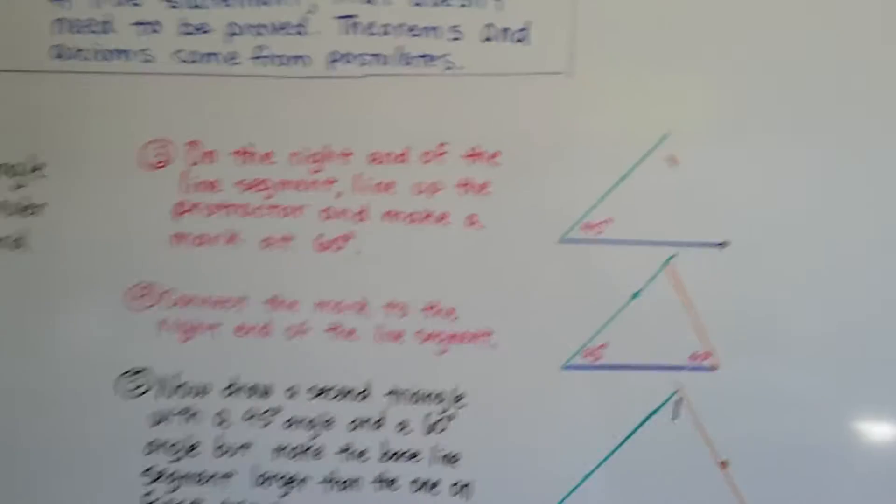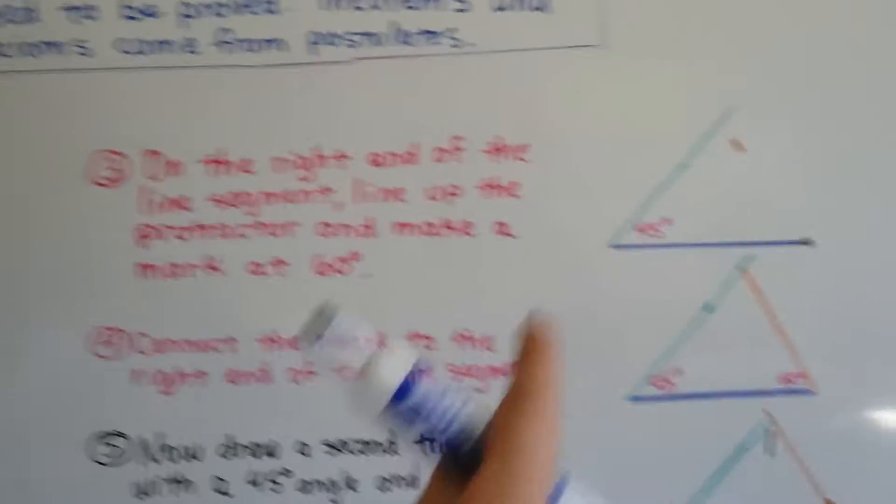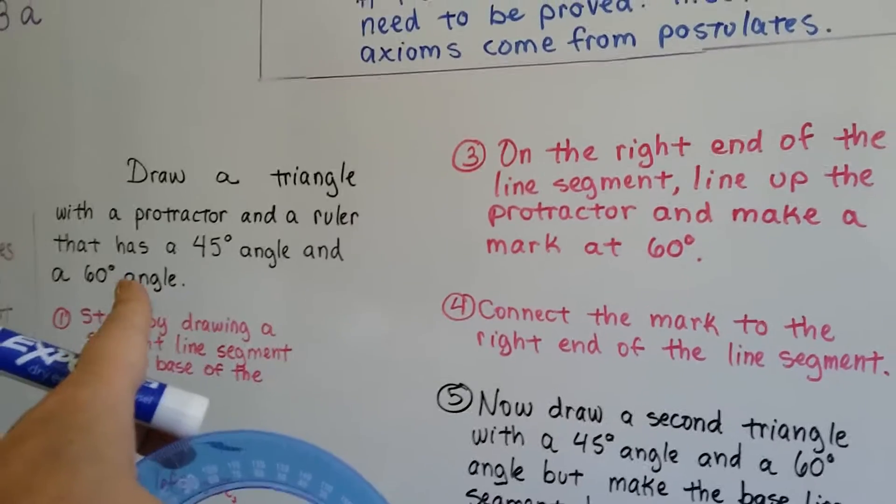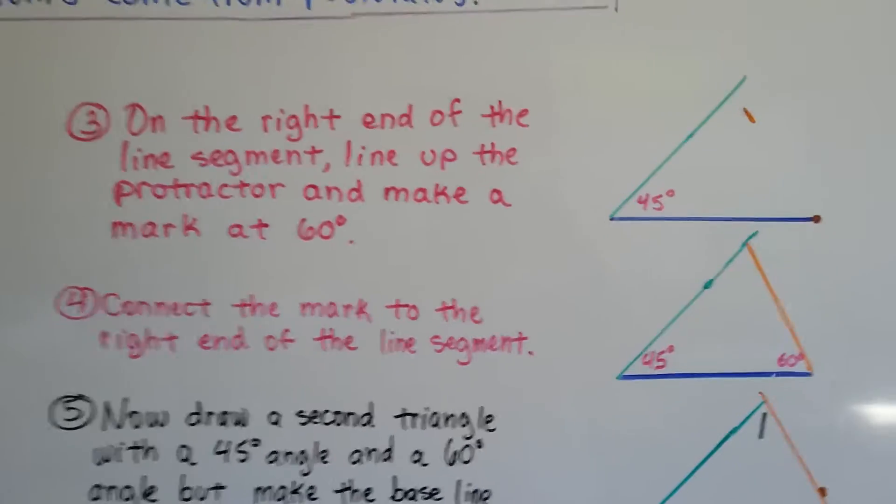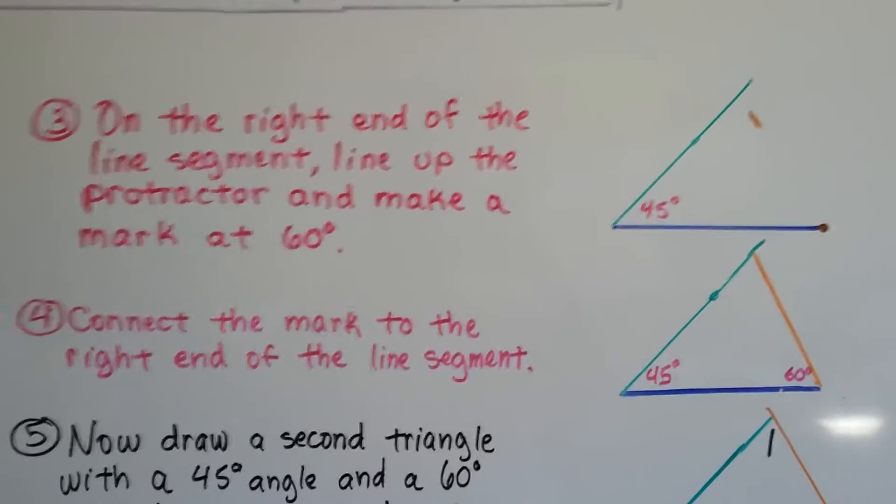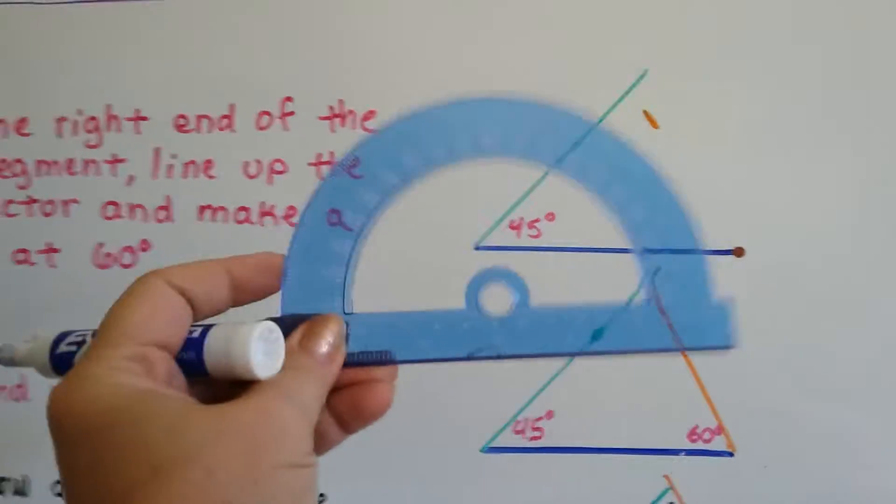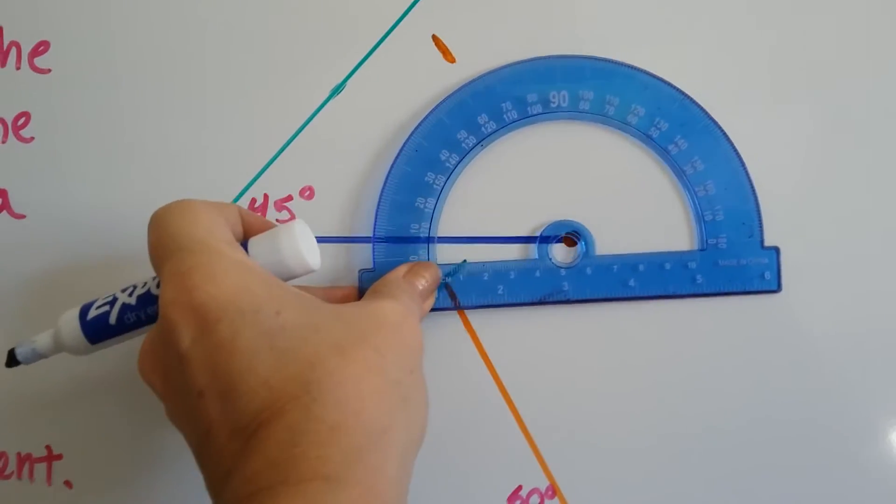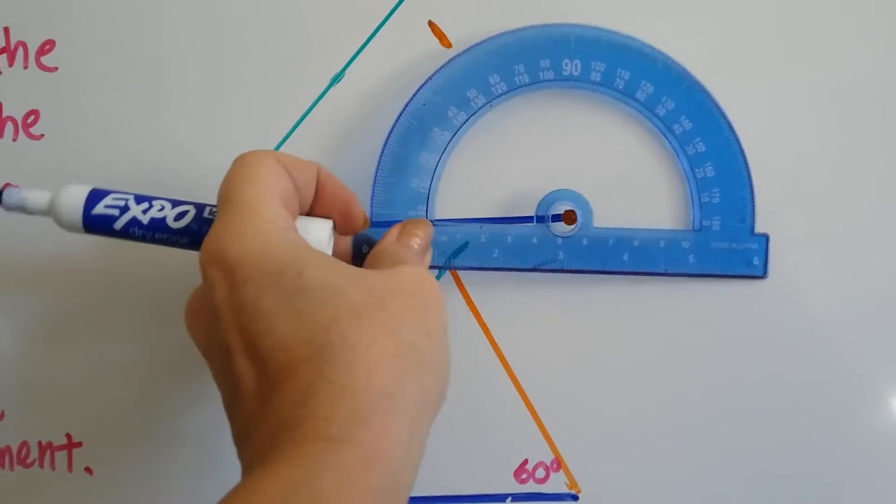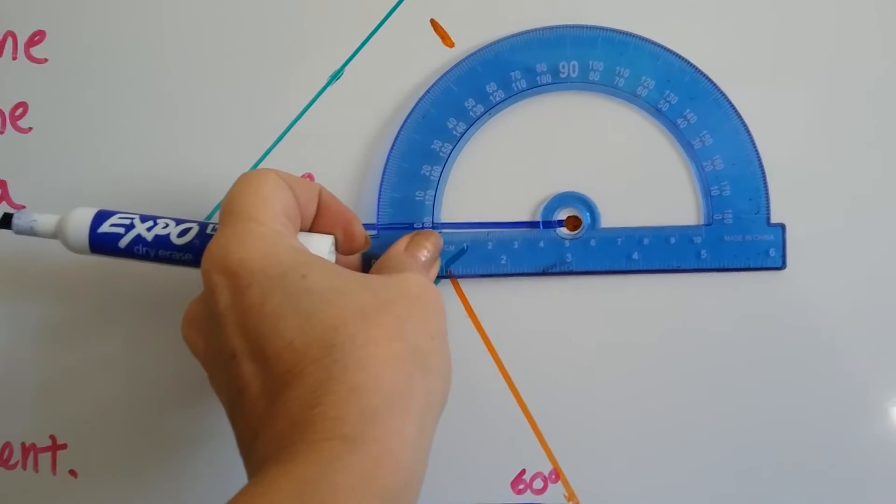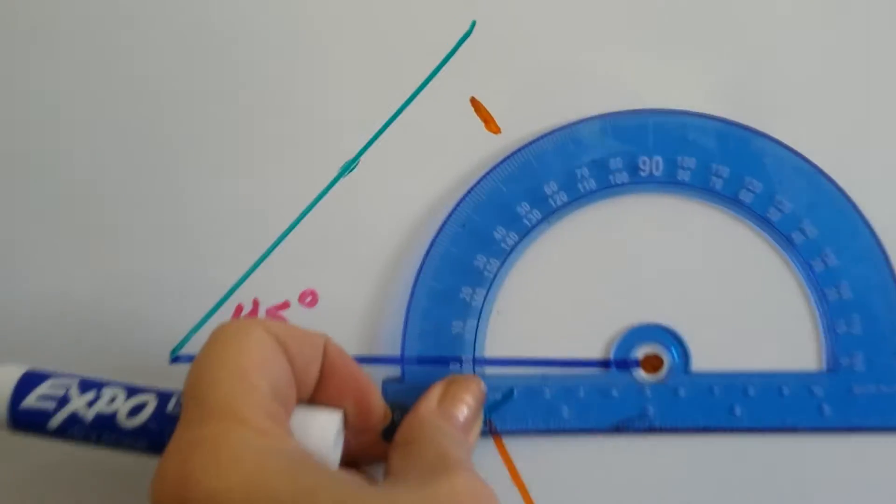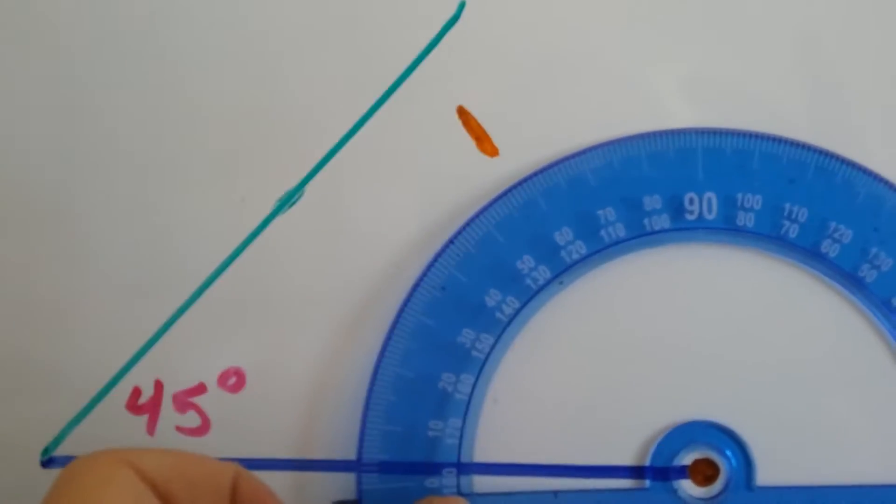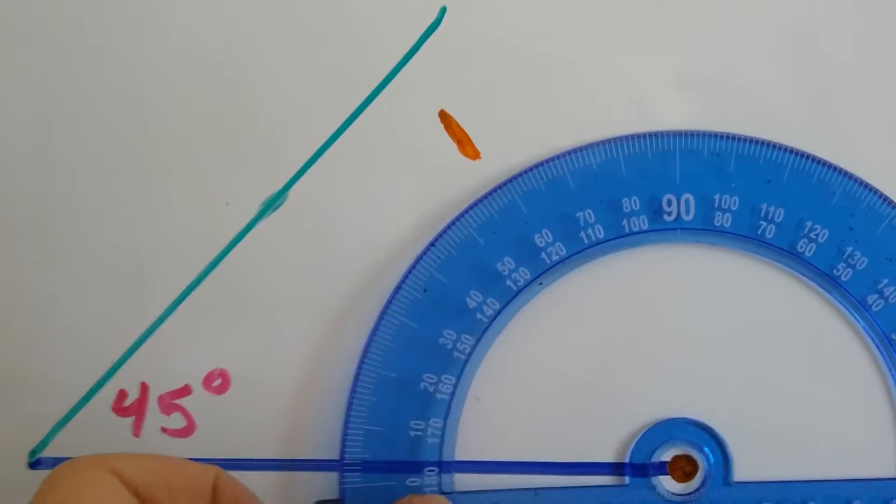So now what we're going to do, because we have our one 45-degree angle, and we need to make a 60-degree angle, on the right side of the line segment, we're going to do the exact same thing. We're going to line up that circle on the end of the line segment, and we're going to put this part right underneath the line, and I'm going to put a mark where the 60 degrees is. 60 degrees is right there.